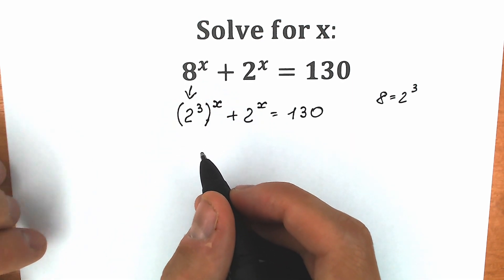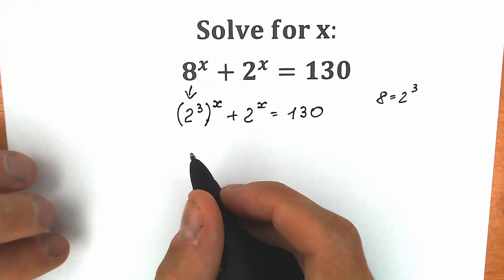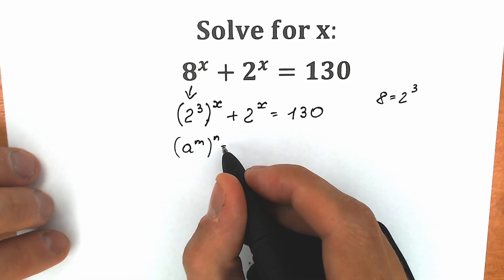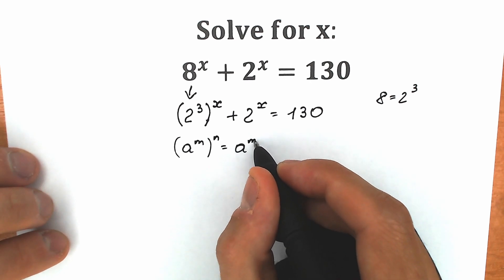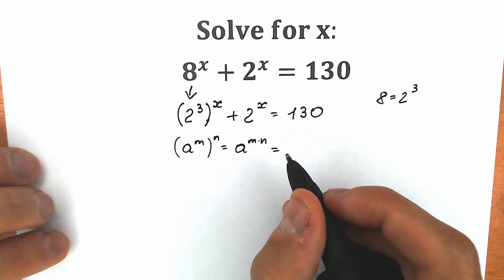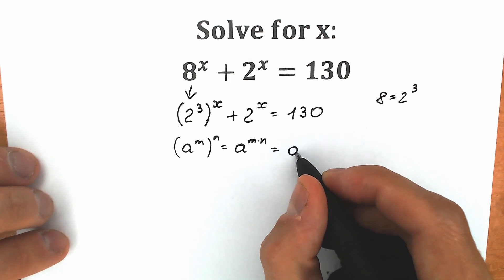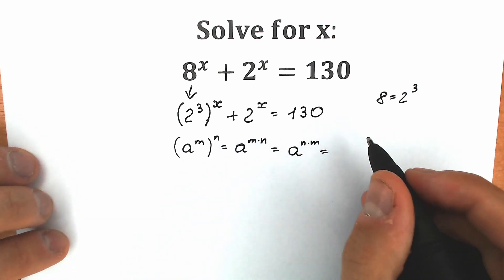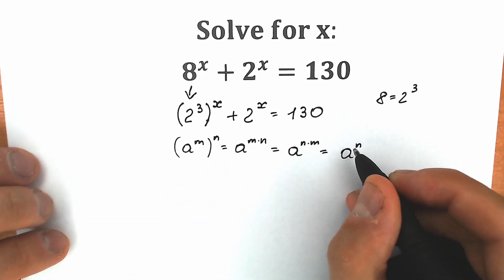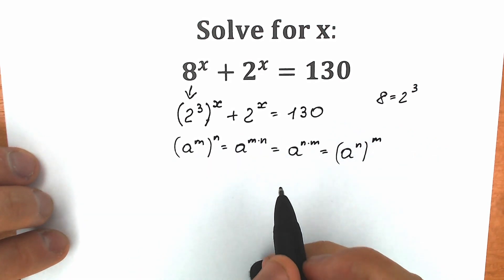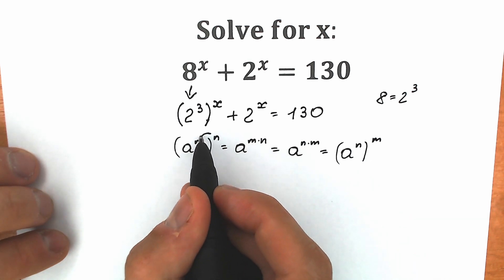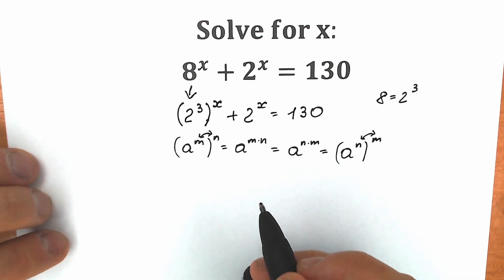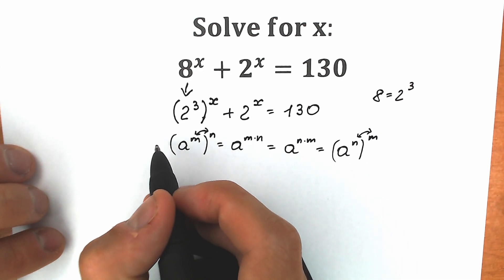Right now we need to remember a really interesting rule. When we have, for example, 8 raised to the power m raised to the power n, this equals 8 to the power m times n. We can swap m and n, so we can write it as 8 to the power n raised to the power m. Someone calls this the rule of interchange, so let's apply this rule right here.